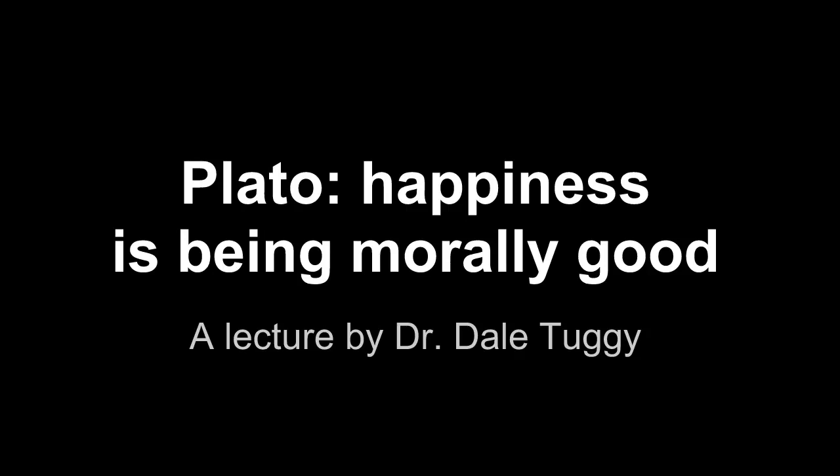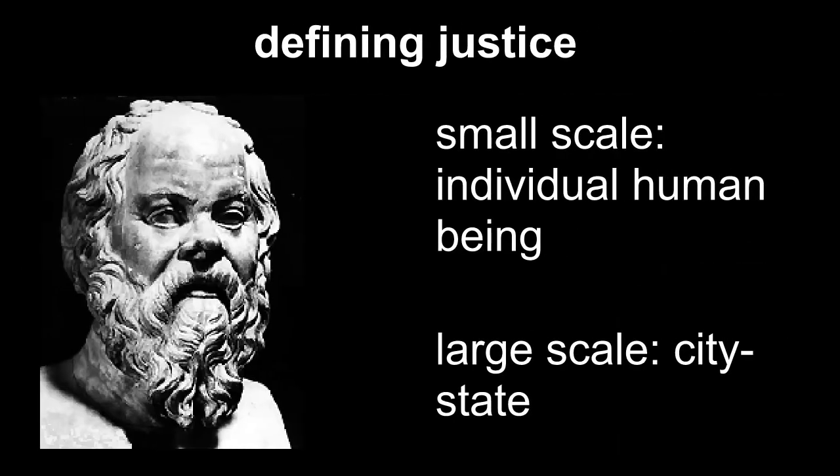In this part of the dialogue, Socrates adopts an interesting strategy. He wants to see what justice is. He wants to define justice or goodness. And so, his strategy is to consider it on a larger scale. His idea is that if it's small, it's hard to tell what it is. But if we consider a big example of it, it will be easier to tell what it is. So, he's interested, ultimately, in the individual human being scale. But what he's going to do first is he's going to consider it on the city-state scale.